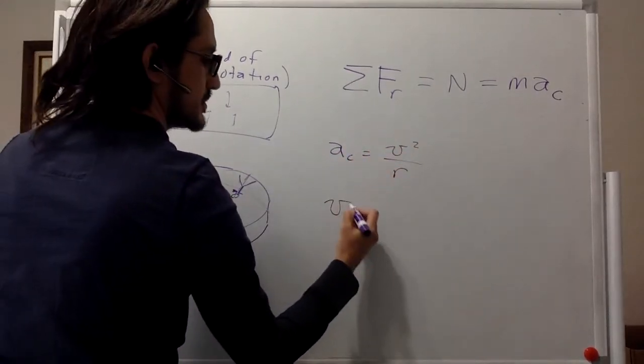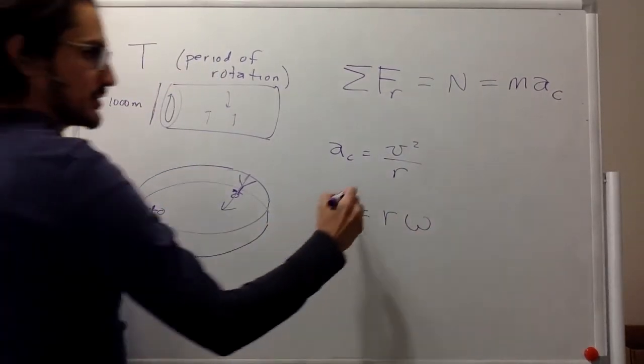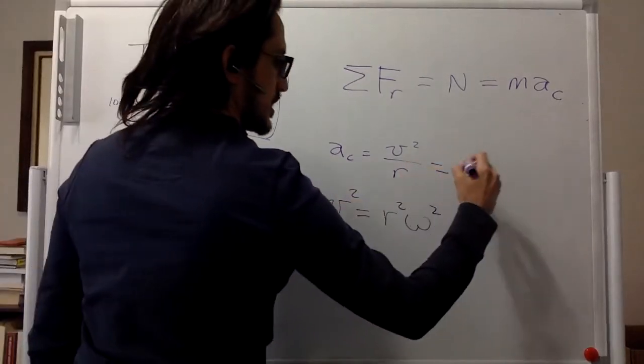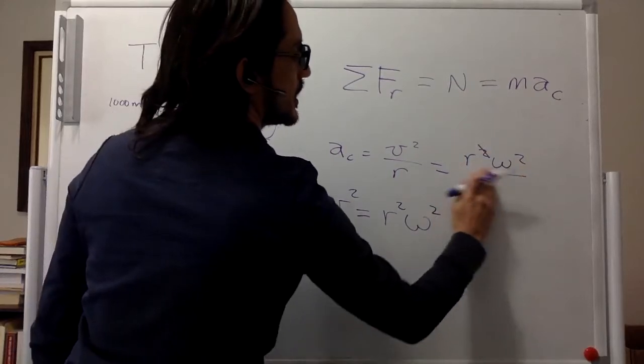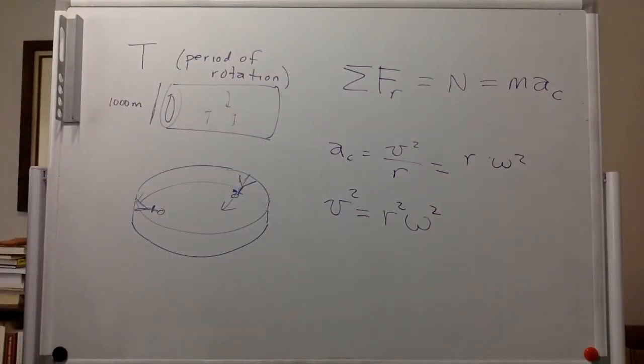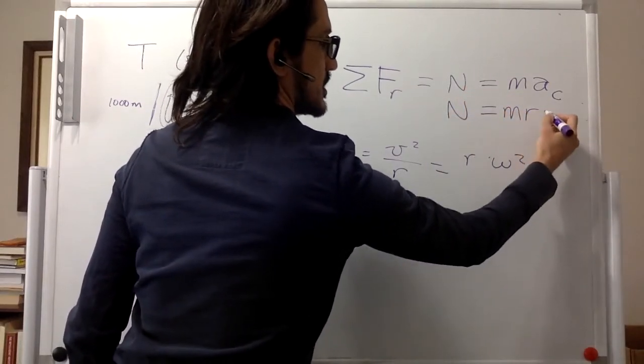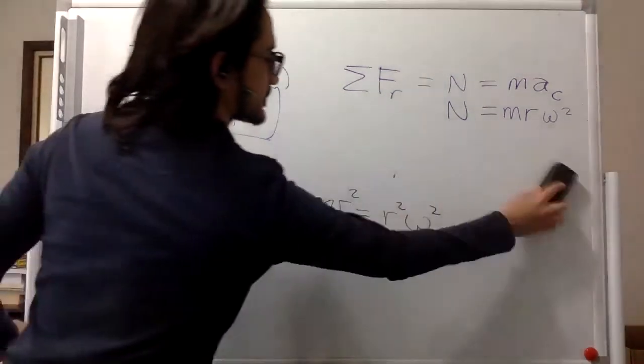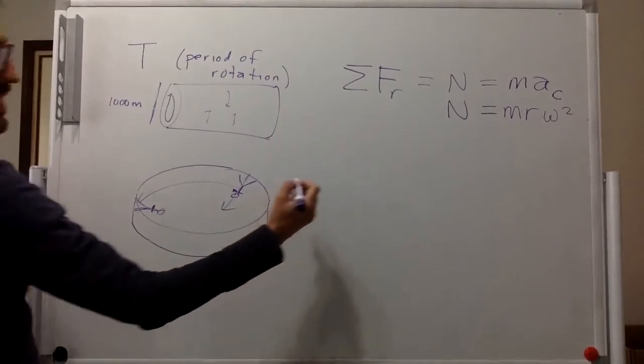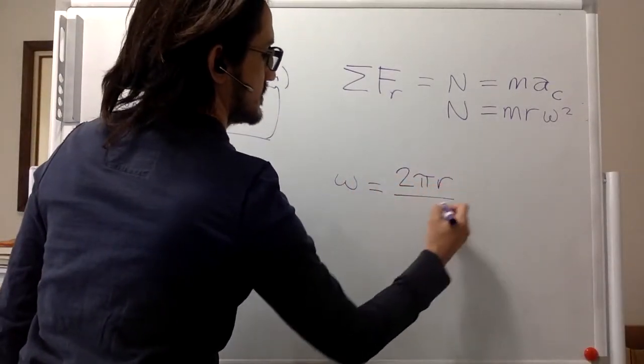But remember that the tangential velocity is r times omega, where omega is the angular frequency. So v squared is r squared omega squared. So we'll have r squared omega squared divided by r. We get rid of this r and this r. And so the centripetal acceleration is r omega squared. So that means that over here, the sum of forces is mass times the radius times the angular frequency squared. And so omega is 2 pi divided by the period.